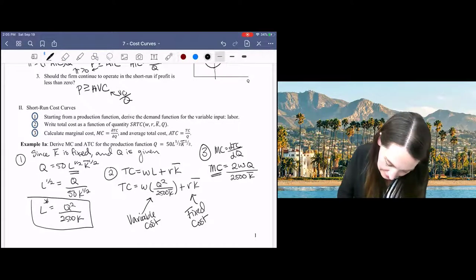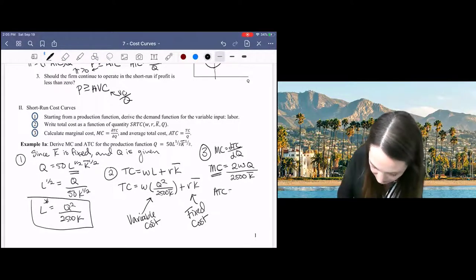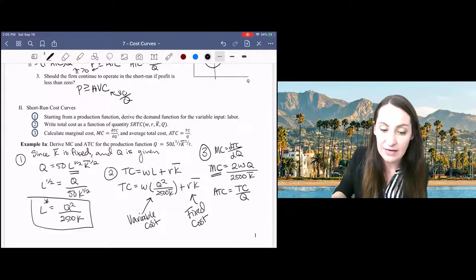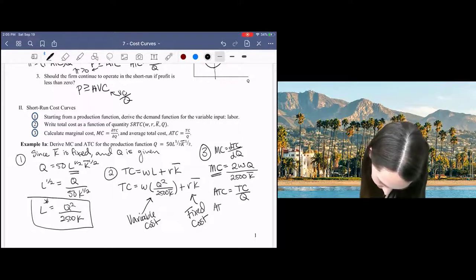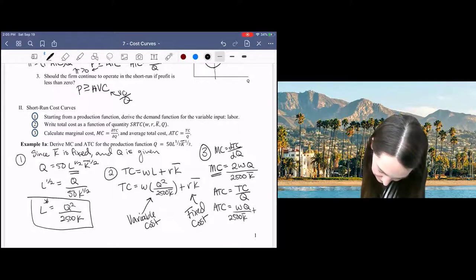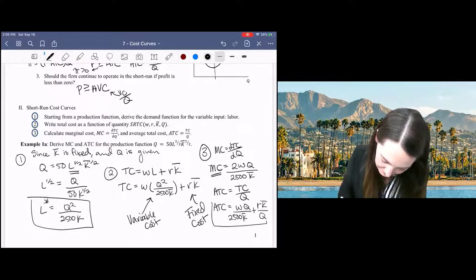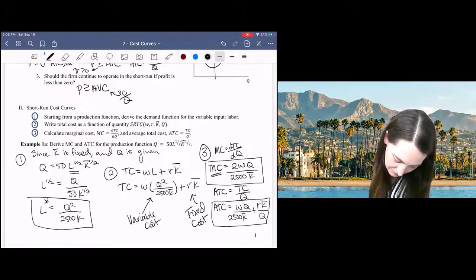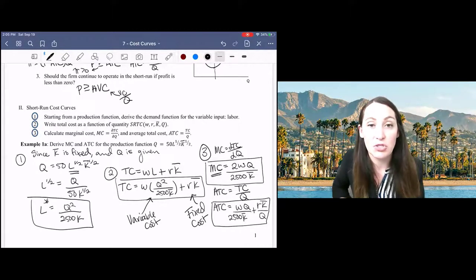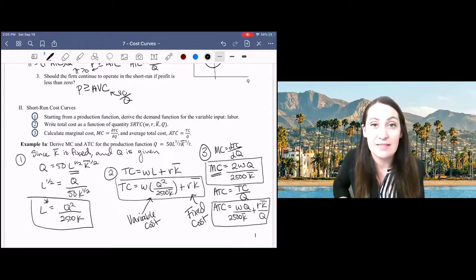And then my average total cost is take my cost function divided by quantity. So that's a bit different. But we're going to get WQ over 2500K plus RK over Q. All right. So they're not super pretty, but those are our cost functions in the short run when capital is fixed.